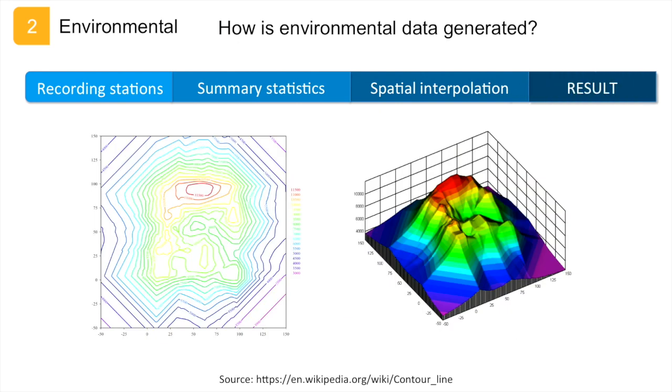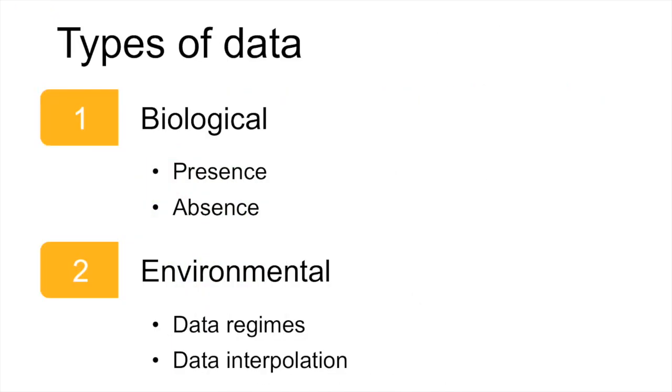The resulting surface can be visually displayed in a two-dimensional graph, which is a contour graph, or in a three-dimensional graph in which the x and y-axis represent the longitude and latitude and the z-axis the value of the environmental factor measured. So in summary, environmental data says something about the environmental conditions of the sites where your species of interest occurs. We can divide environmental data into different regimes and the data that you use in the model is usually interpreted data from raw data collected by measuring stations.